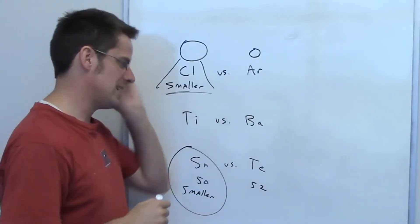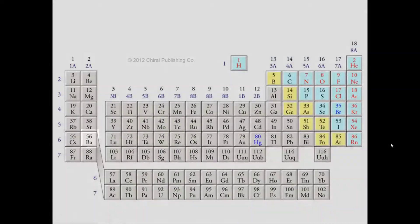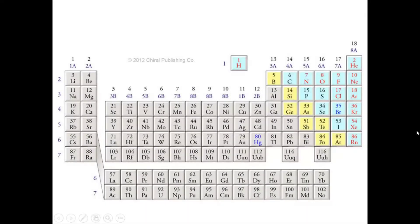Now we'll compare titanium versus barium. Titanium is element number 22 on the periodic table, whereas barium is number 56. Yeah, 56. Barium and titanium are not in the same row. Not only are they not in the same row, they're not even in the same column of the periodic table.